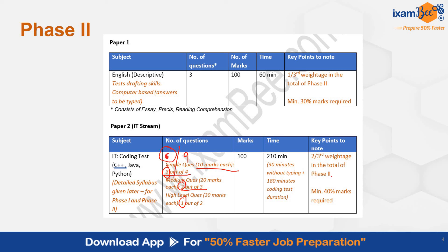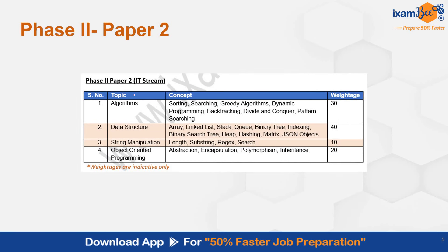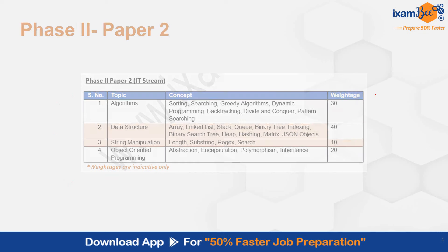You have to attempt 6 questions out of the given 9 choices. The weightage of this exam is 2/4. The syllabus of paper 2 covers: Algorithms — 30 marks weightage; Data Structures — 40 marks; String Manipulation — 10 marks; and OOP concepts — 20 marks. Coding questions are expected from these areas.